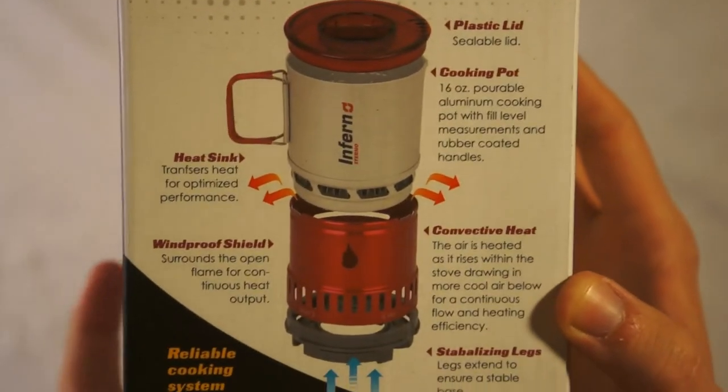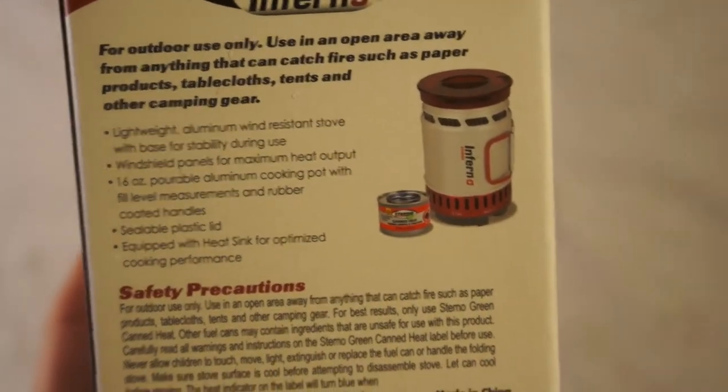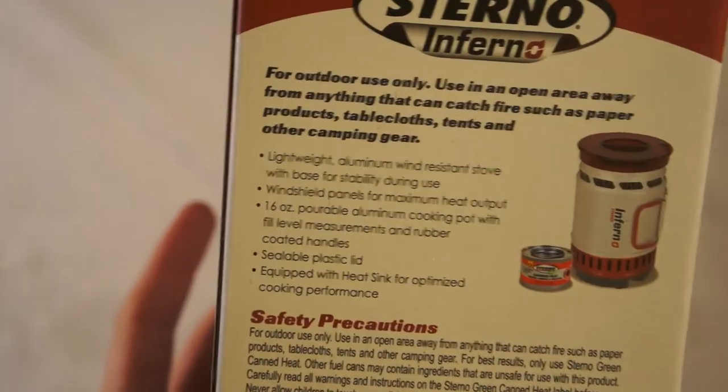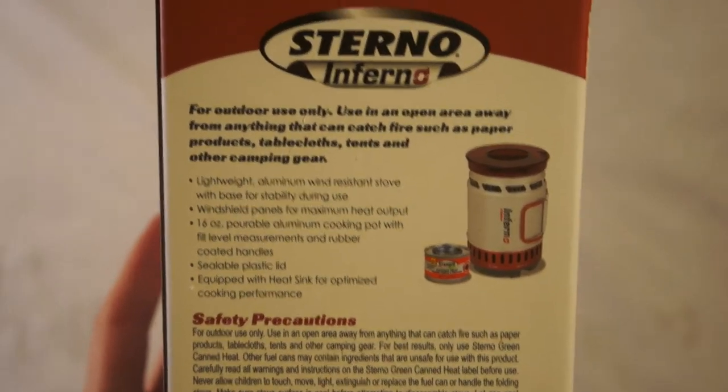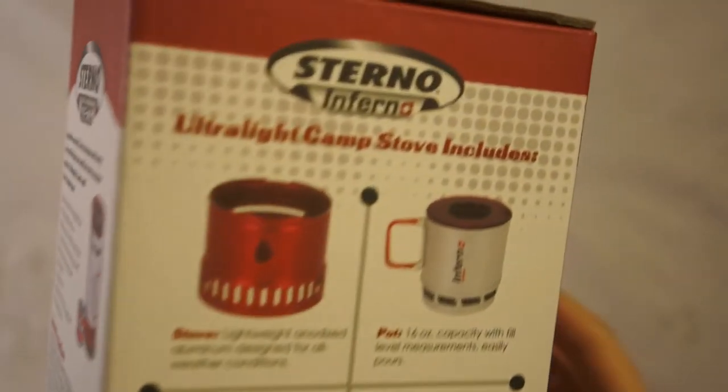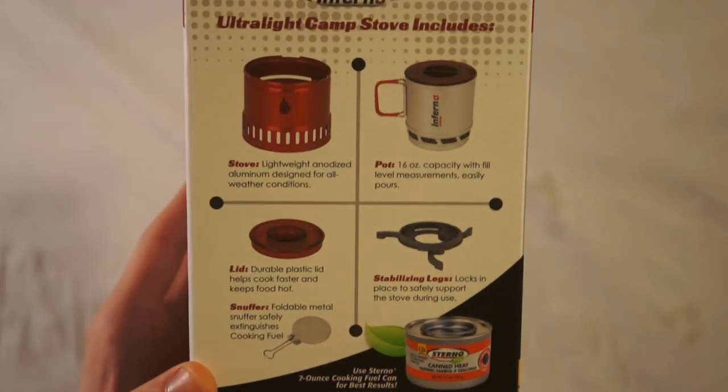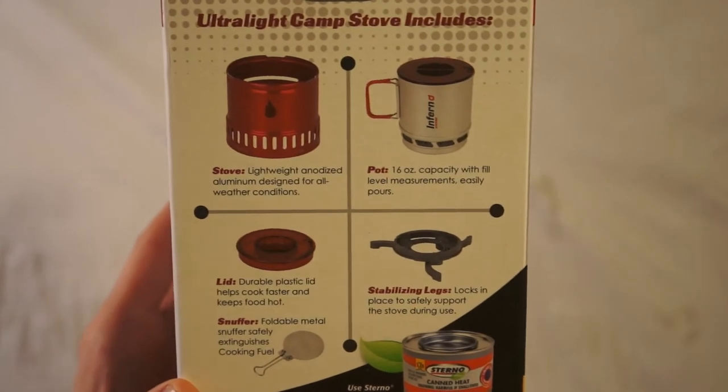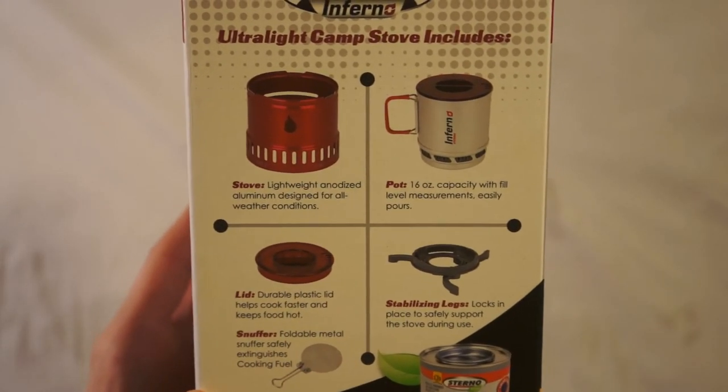And it says reliable cooking system for cold, windy, and wet conditions. It says for outdoor use only. Obviously you'll be using this out in the field. And then this just shows what all comes in it. So you got the stove. You've got the pot. You got the stabilizer leg, the lid, and the snuffer.